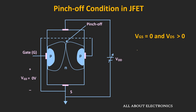As the name pinch-off suggests, once this condition occurs, the current Id should drop to zero because there is no path for the charge carriers to flow. But in reality, that is not the case. Once the pinch-off condition is reached, the current Id actually reaches the saturation level. Let's understand why.